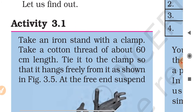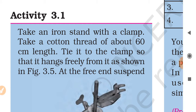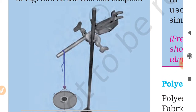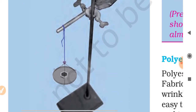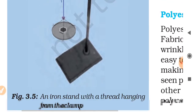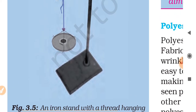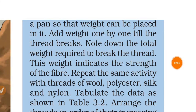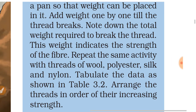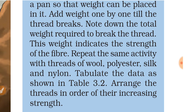Let us find out — you have to do an activity. Take an iron stand with a clamp. Take a cotton thread of about 60 cm length. Tie it to the clamp so that it hangs freely, as shown in figure 3.5. At the free end, suspend a pan so that weight can be placed in it. Add weight one by one till the thread breaks. Note down the total weight required to break the thread. This weight indicates the strength of the fiber.